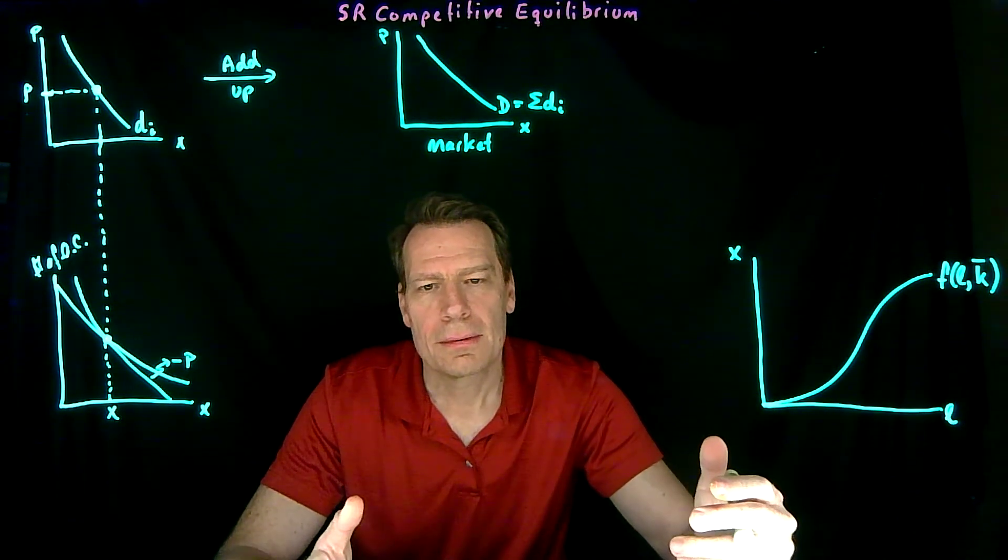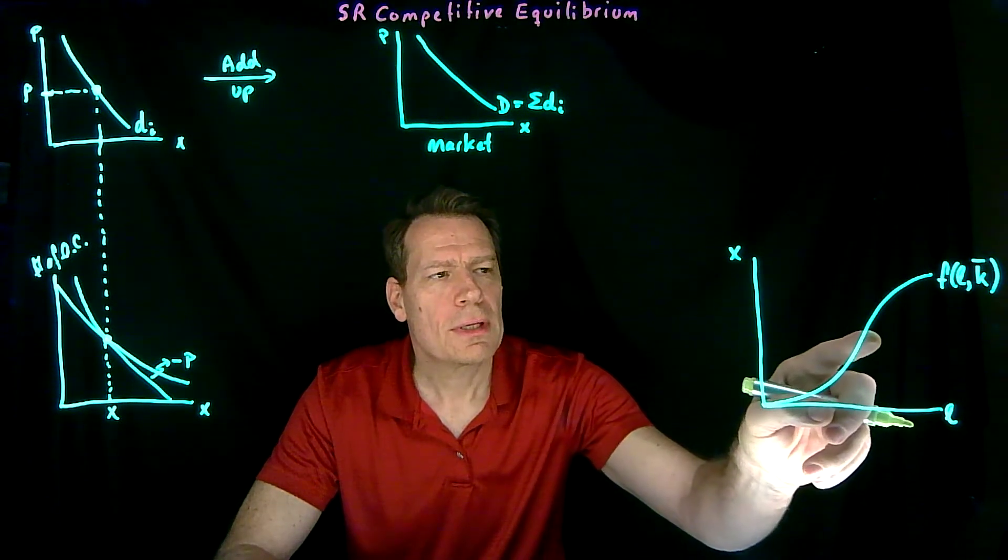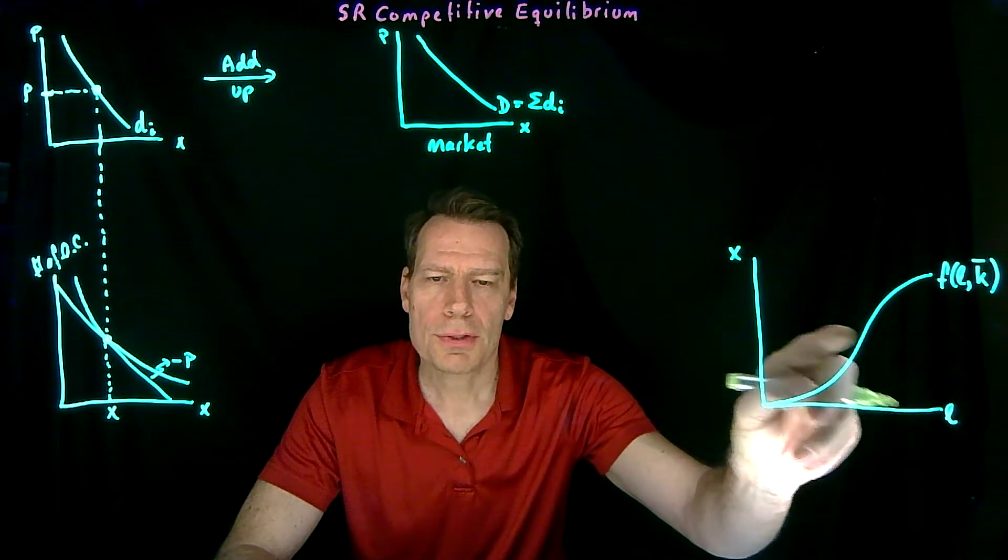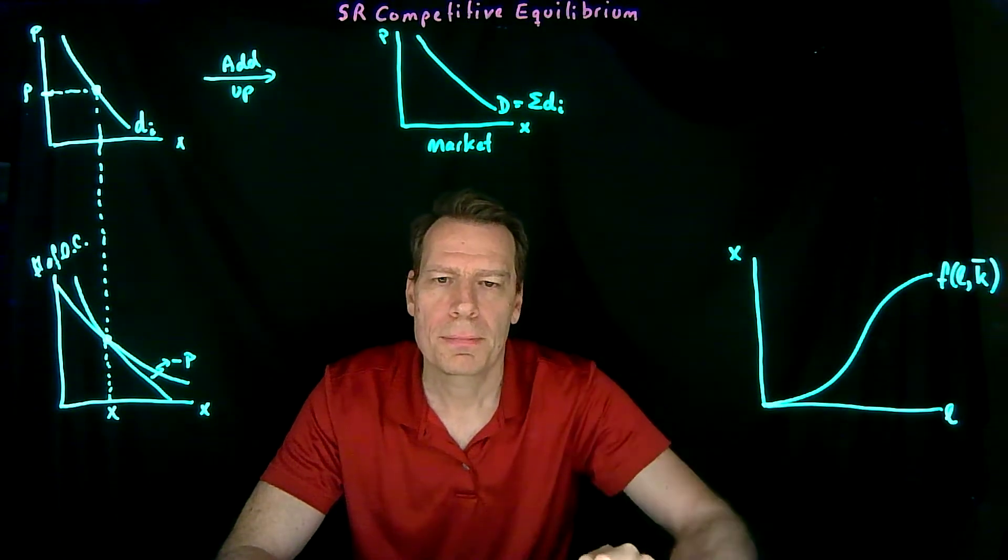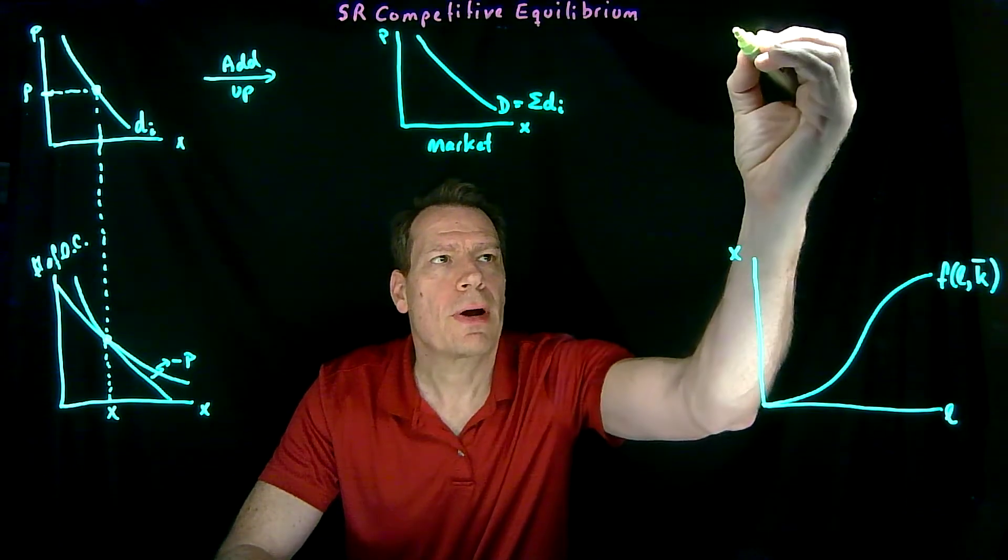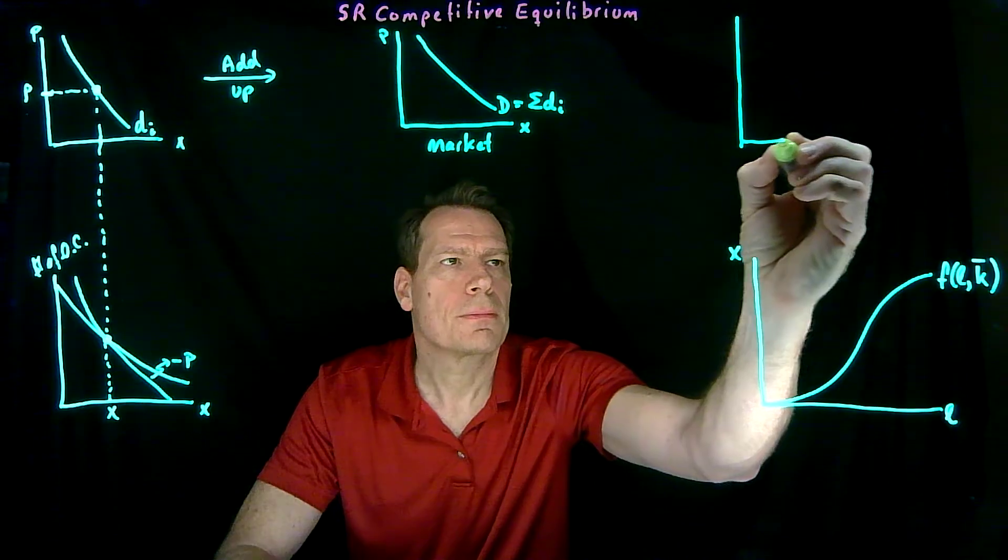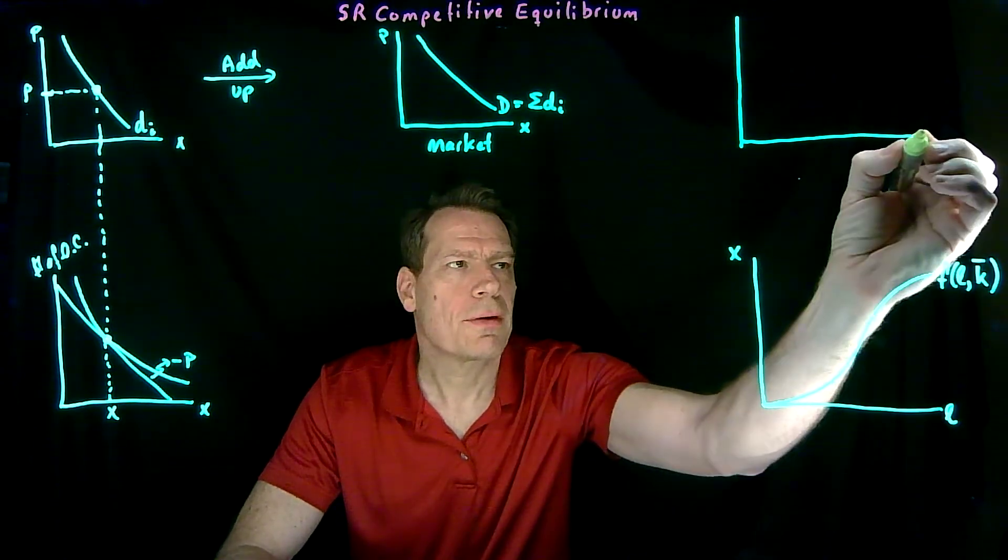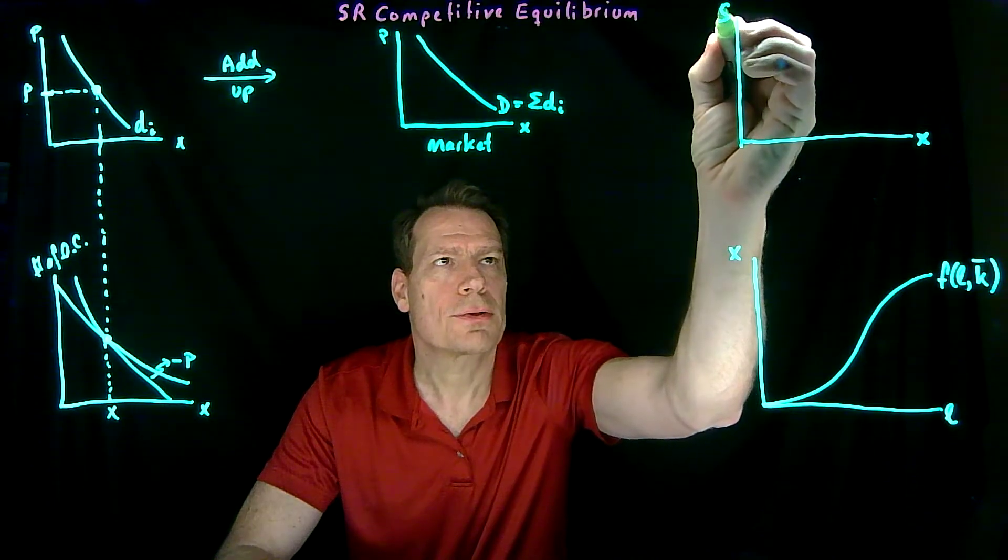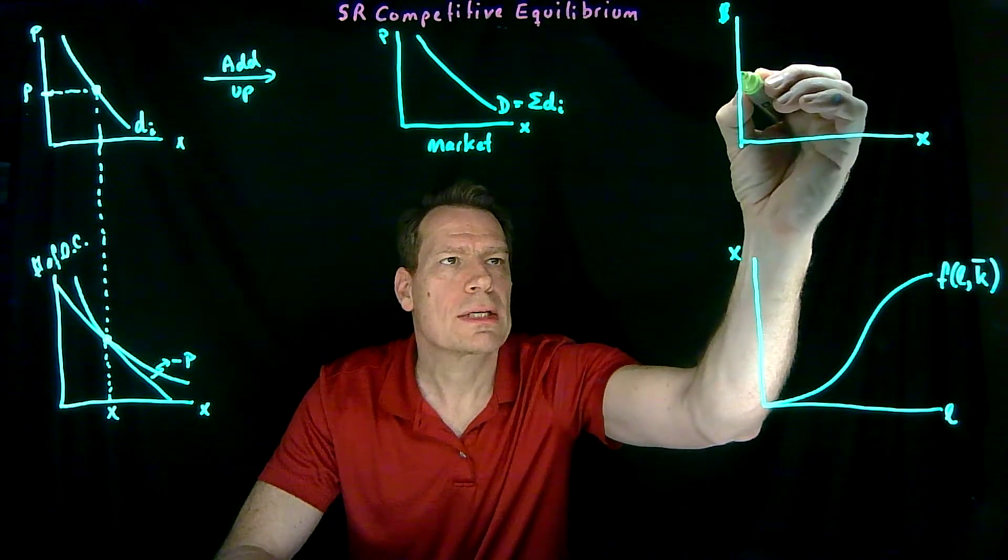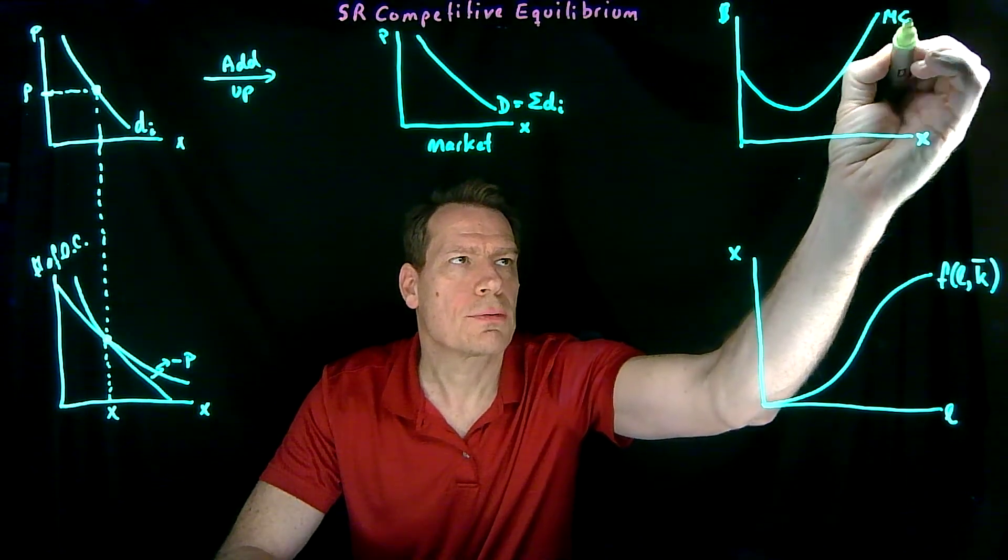We then did two-step profit maximization, where we said you can derive from this the firm's cost function. The cost function will have kind of this inverse shape. And from the cost function, you can derive the firm's marginal cost function. So now we'll have the good x on this axis, dollars on this axis, and we can trace out the marginal cost of producing in the short run.